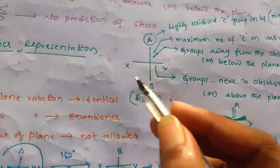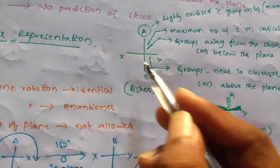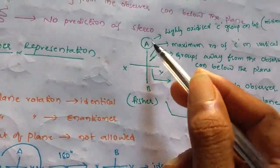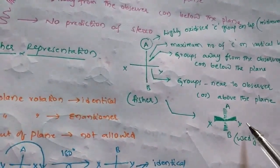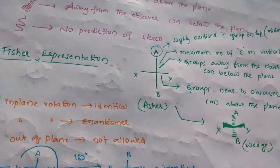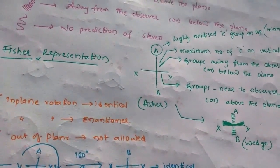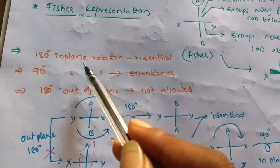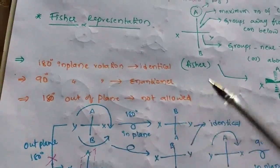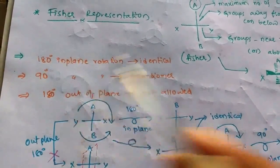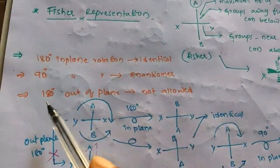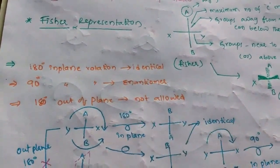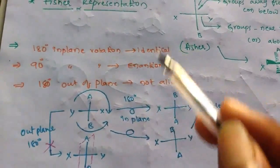In the Fischer projection, if we check the wedge representation: the groups on the horizontal lines are above the plane and nearer to the observer, while the groups on the vertical line are below the plane. Fischer representation is more applicable to organic molecules. Important points: if we rotate 180 degrees in-plane, we get identical structures; if we rotate 90 degrees in-plane, we get enantiomers; and rotation 180 degrees out of the plane is not allowed by Fischer projections.